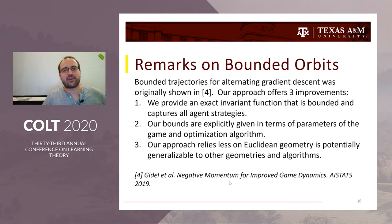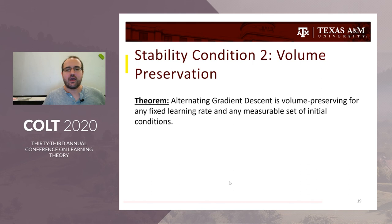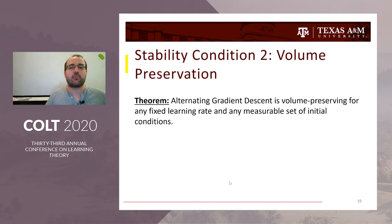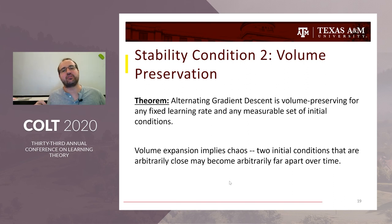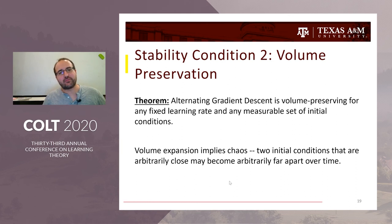Now let's go back to Poincaré recurrence and establish the second stability condition: volume preservation. Volume preservation means roughly what it sounds like — if you take a circle with area one and update every single point in it, the area of those updates is still one. The reason not having volume expansion is important is because volume expansion actually implies chaos, allowing two arbitrarily close initial conditions to become arbitrarily far apart. Interestingly, this result holds for general games, not just zero-sum, and makes no stipulation on the learning rates.